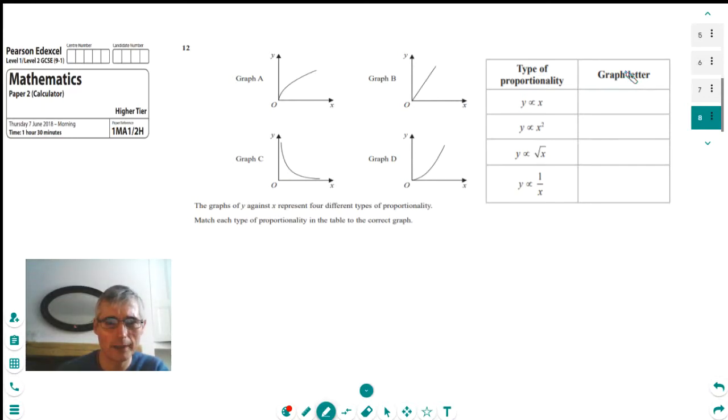This is about looking at a series of graphs and trying to work out what the proportionality is of them. These graphs of y against x represent four different types of proportionality. We've got to match each type of proportionality in the table to the correct graph.